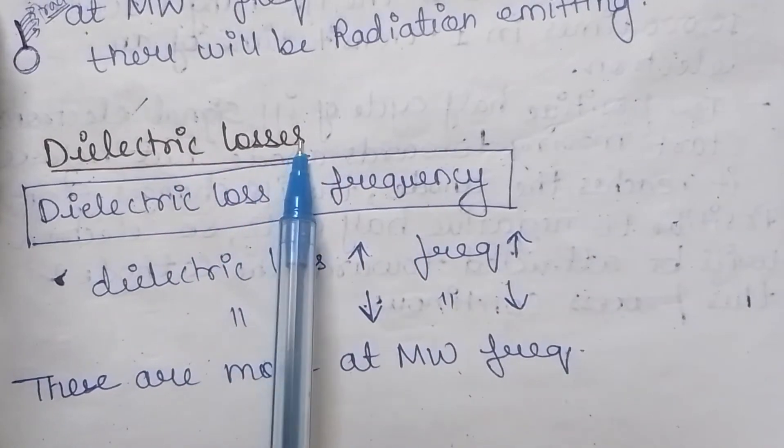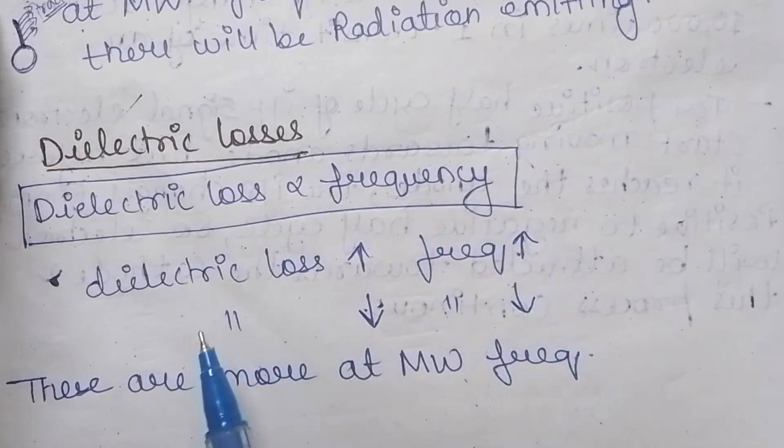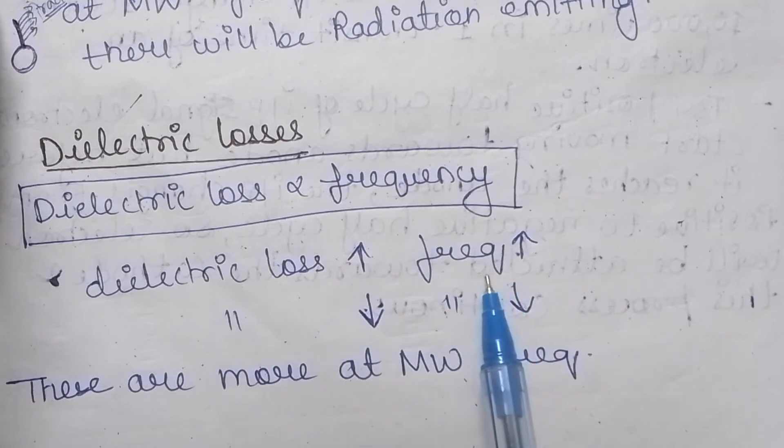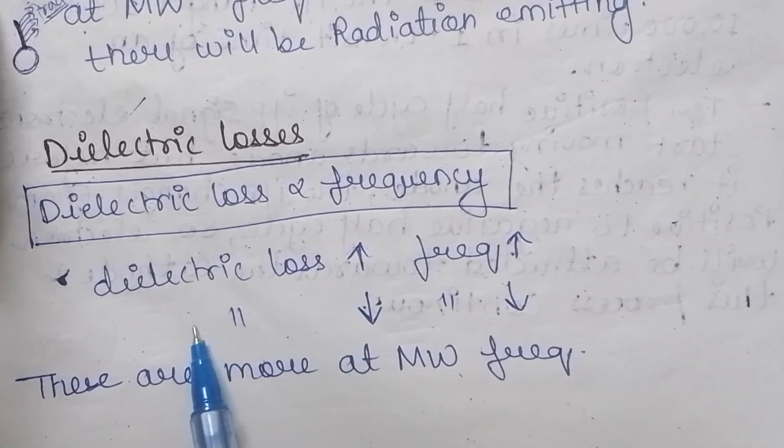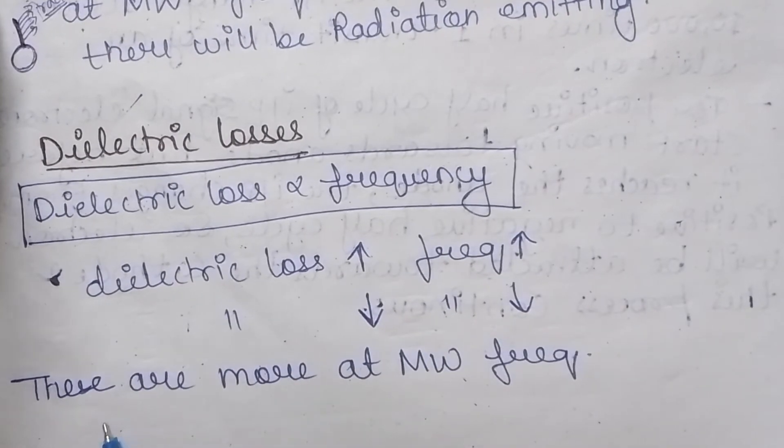Now the next limitation is dielectric losses. Dielectric losses are directly proportional to the frequency. It means that if there is more dielectric loss, the frequency will be also more, and if there is less dielectric loss then the frequency is also less.